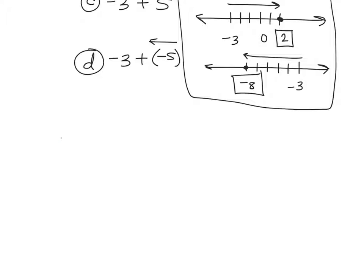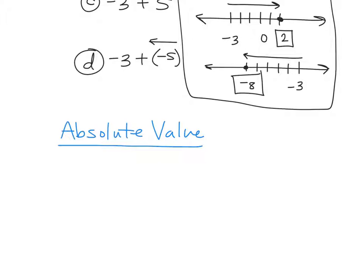Can you tell me anything about absolute value? Anyone know what absolute value is? Anyone know what symbol is attached with absolute value? What's the symbol we use for absolute value? It's two bars. So if I talk about the absolute value of negative 3, it would look like that. Absolute value — what it does is it's always a distance from zero. Distance from zero on a number line.